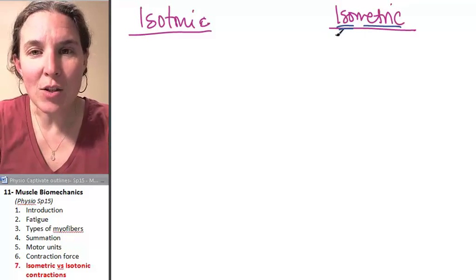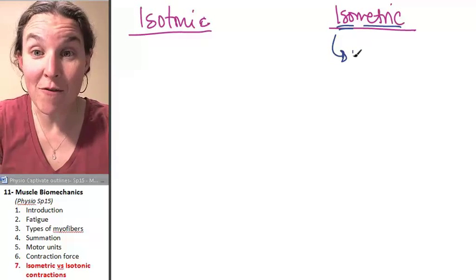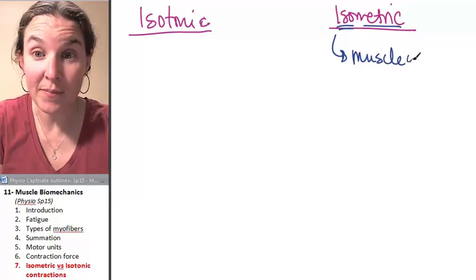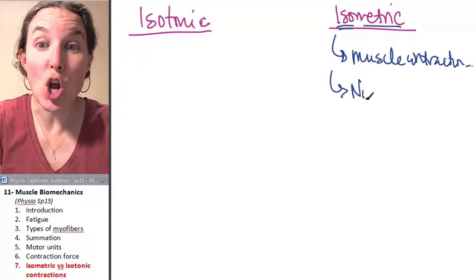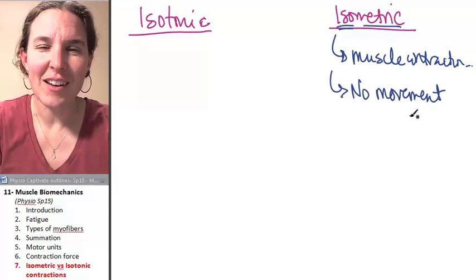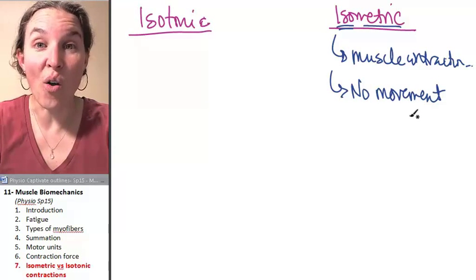In an isometric contraction, you have muscle contraction, but you have no movement. What? It happens all the time.